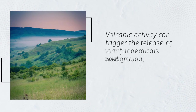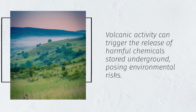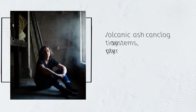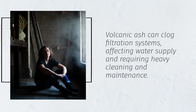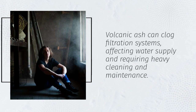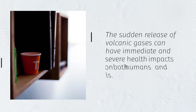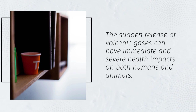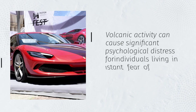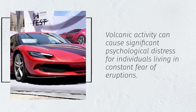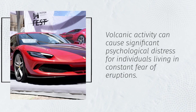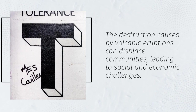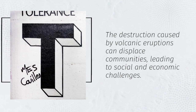Volcanic activity can trigger the release of harmful chemicals stored underground, posing environmental risks. Volcanic ash can clog filtration systems, affecting water supply and requiring heavy cleaning and maintenance. The sudden release of volcanic gases can have immediate and severe health impacts on both humans and animals. Volcanic activity can cause significant psychological distress for individuals living in constant fear of eruptions. The destruction caused by volcanic eruptions can displace communities, leading to social and economic challenges.